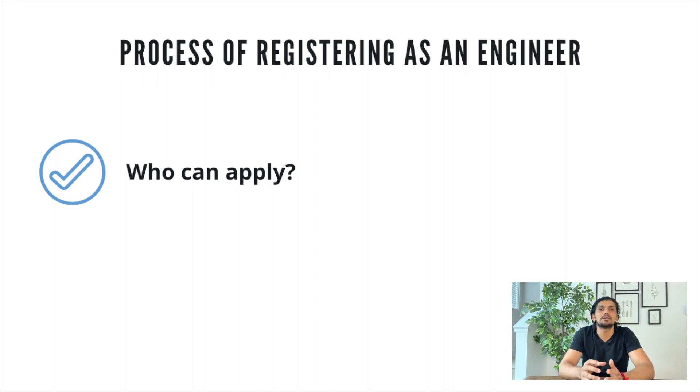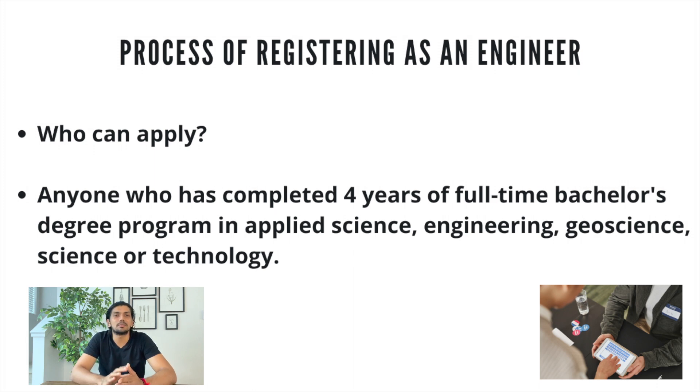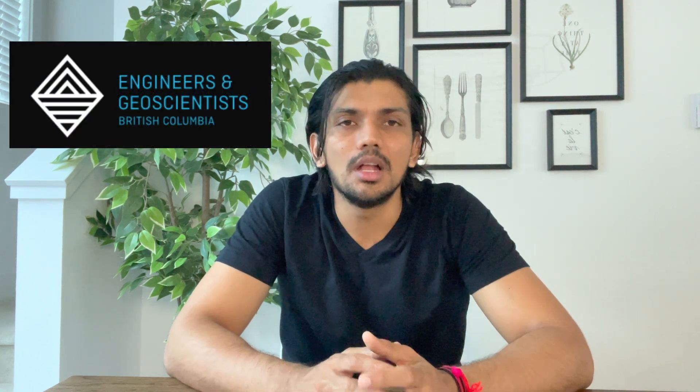Let's talk about the process of registering yourself as an engineer using British Columbia as an example. The process is similar for all other provinces with some small modifications. The first step is to find the governing body — for BC it is EGBC, which is Engineers and Geoscientists of British Columbia. You need to set up an account and upload all the information for your education and experience.